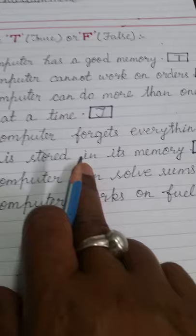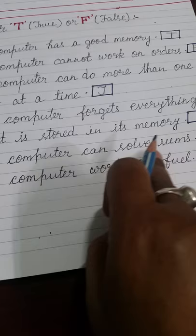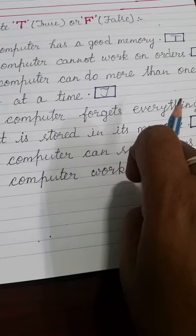Four: A computer forgets everything that is stored in its memory. Computer ke memory mein jo bhi store hota hai, yani ki jo bhi calculation jo bhi kuch hota hai, woh kya karta hai, bhool jata hai. This is false, kyunki woh kabhi bhulta nahi. Right here, F.